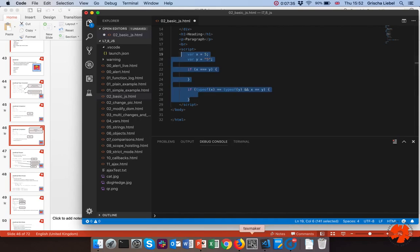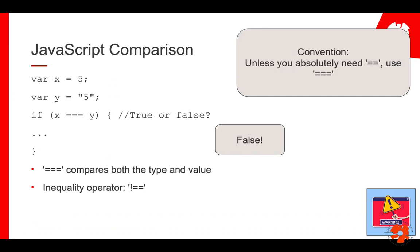This is important to note. A typical recommendation in this context is: use the triple equals. Because, as I said, this can be a source of error if you are not aware of the problem and you compare things in a way you don't intend. So use the triple equals unless you really absolutely need the double equals — and typically you do not, because you can do the type conversion yourself. This way, if someone reads your code and sees triple equals, they know there won't be any misunderstandings with type and value comparison.